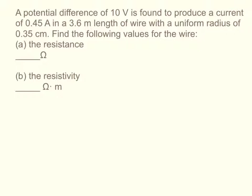So first it wants to get the resistance. Resistance, it gives us voltage and current in the right units, so we don't have to do any conversion. R equals voltage over current, so you get 10 over 0.45. Resistance is approximately 22.22 ohms.